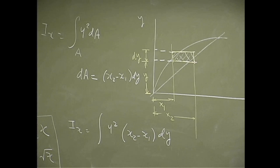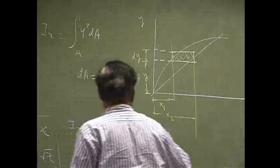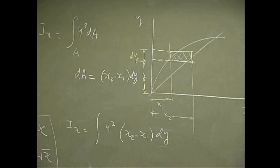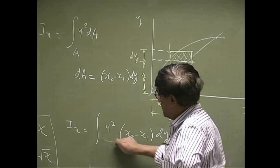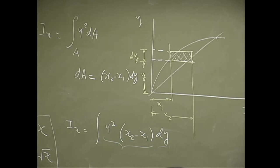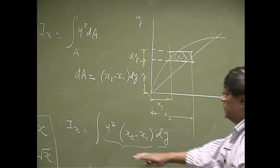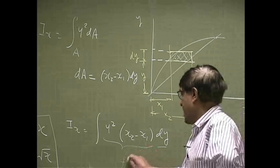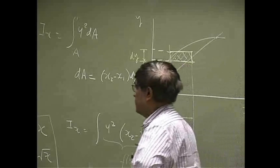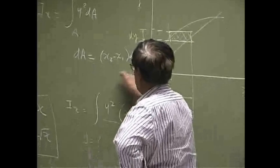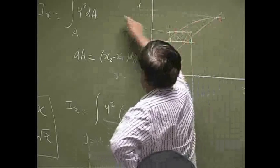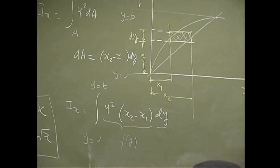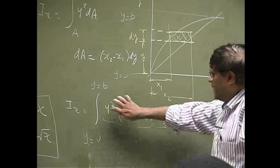From the diagram, dA equals (x2 − x1) dY. So Ix becomes the integral of y²(x2 − x1) dY. The limits are y = 0 to y = b. However, we can't have a mixed function of x and y, so we need to express x2 and x1 in terms of y.